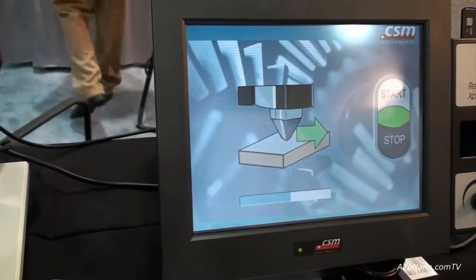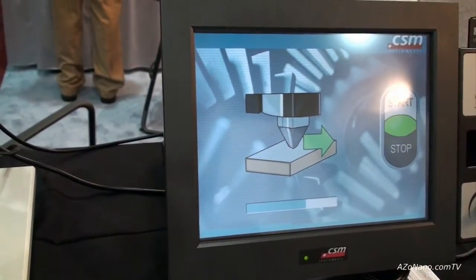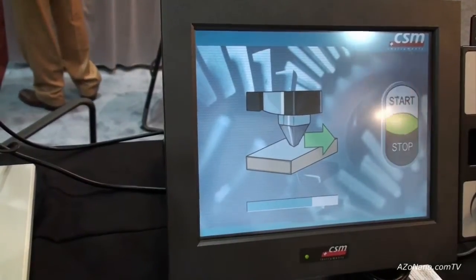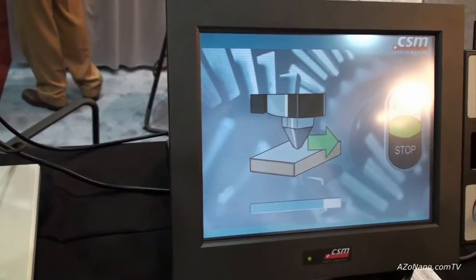We're doing a progressive load scratch up to 50 newtons and we're trying to see at what load the coating delaminates. What load do we actually have failure of the coating?